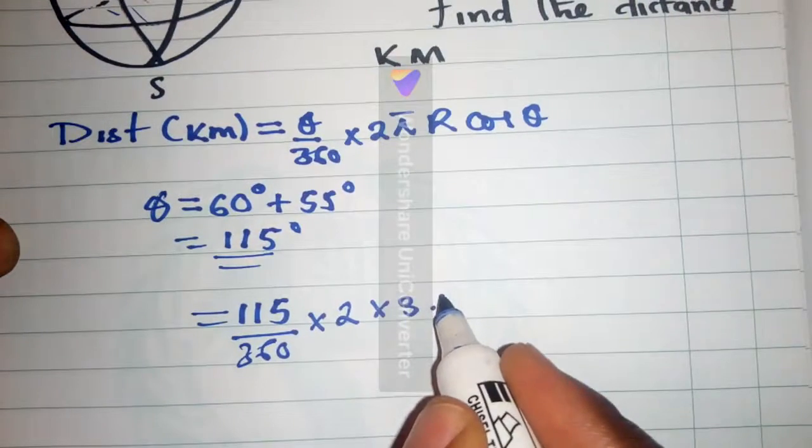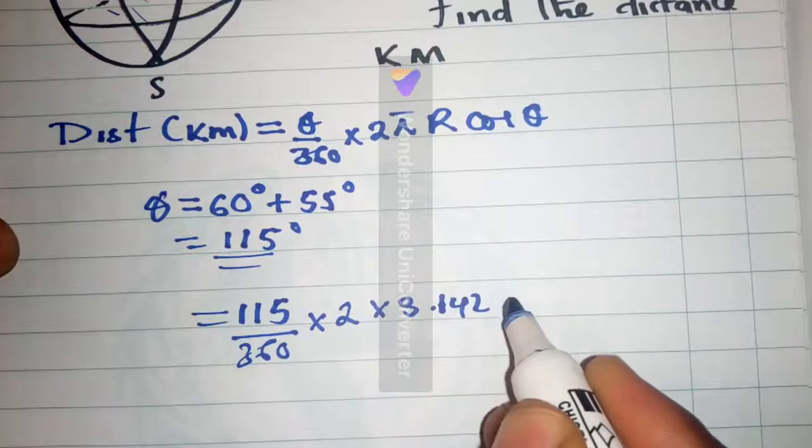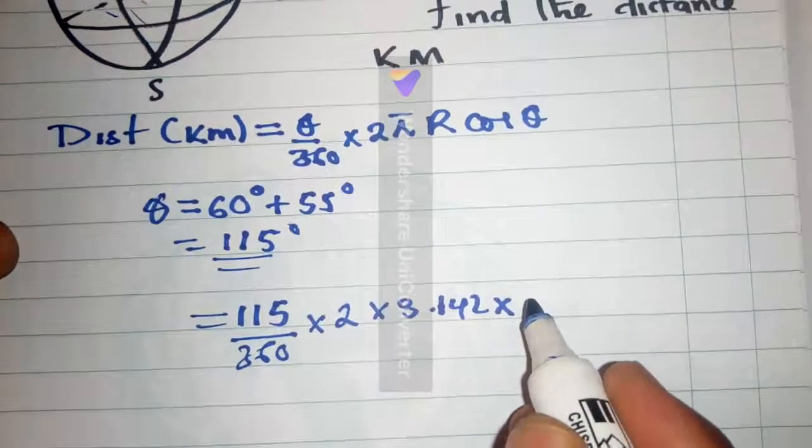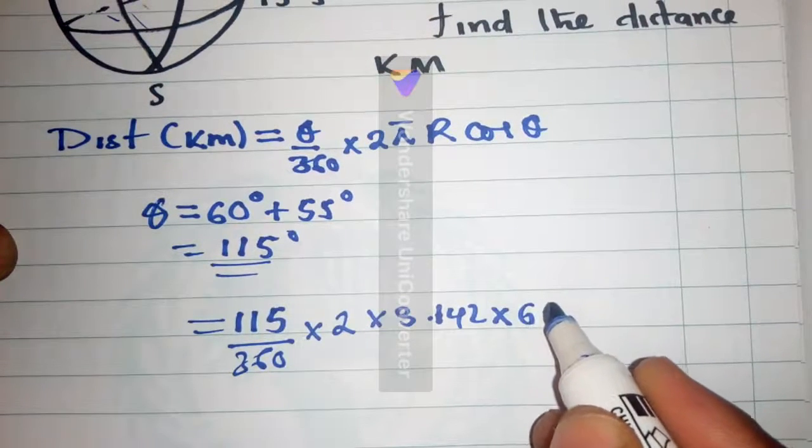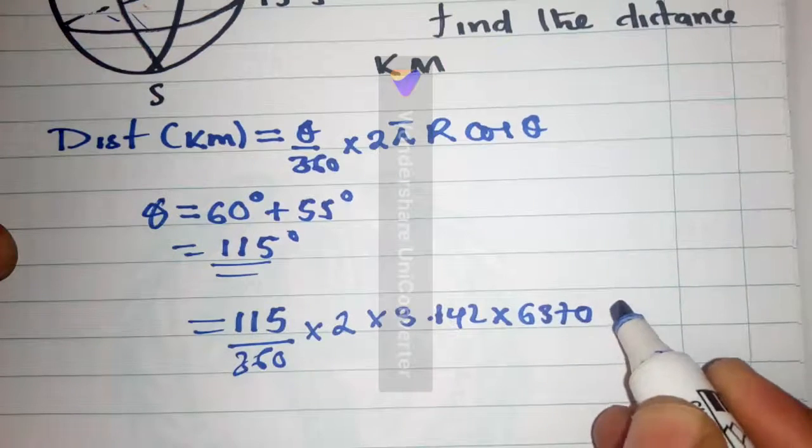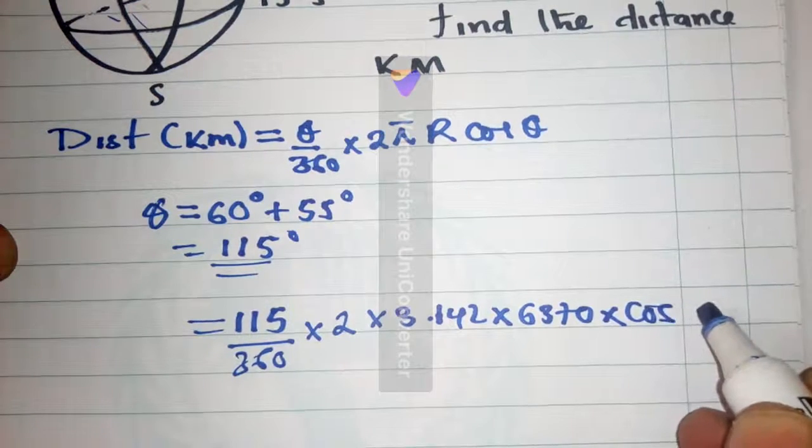So, 3.142 times radius, which we have also been given, which is 6370 times cos 20.